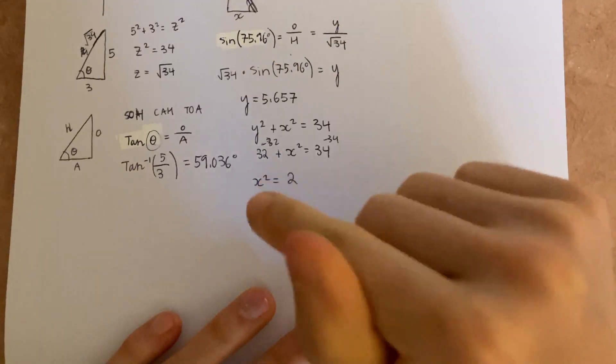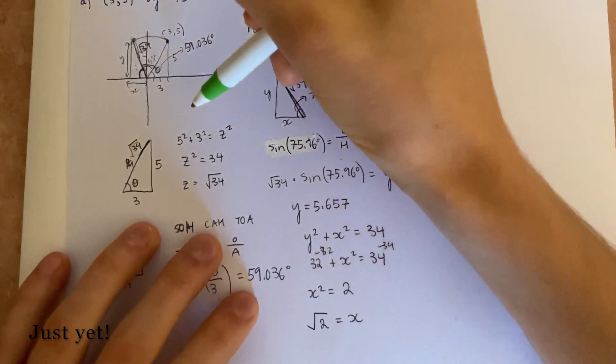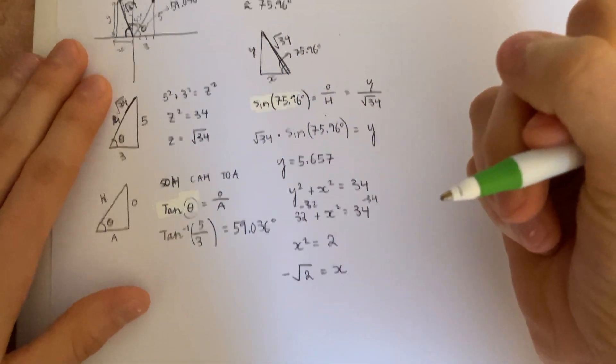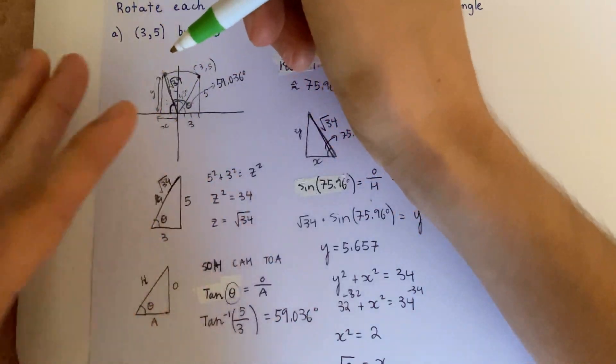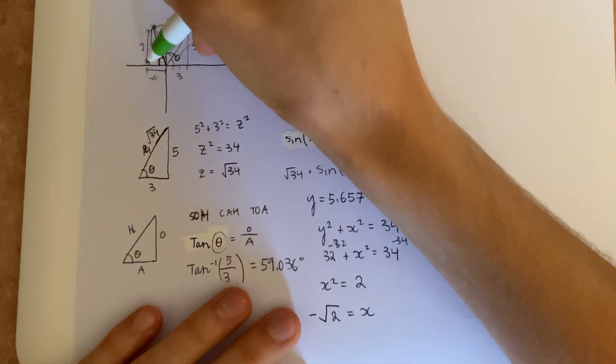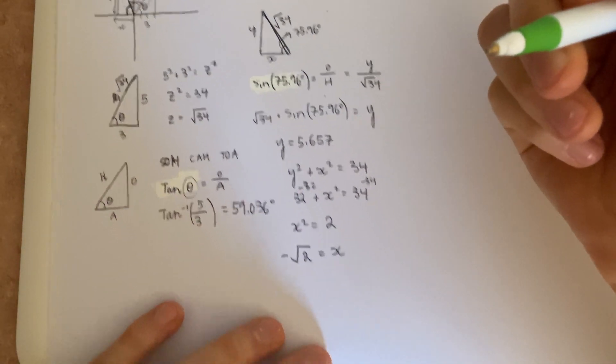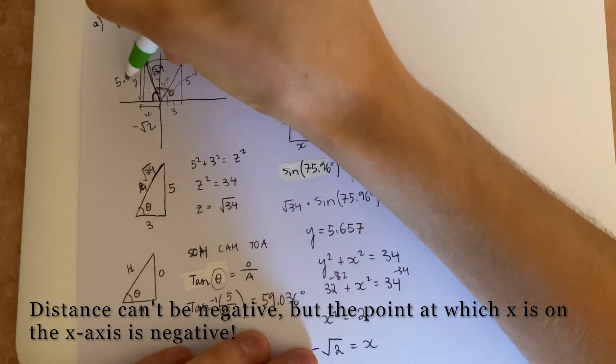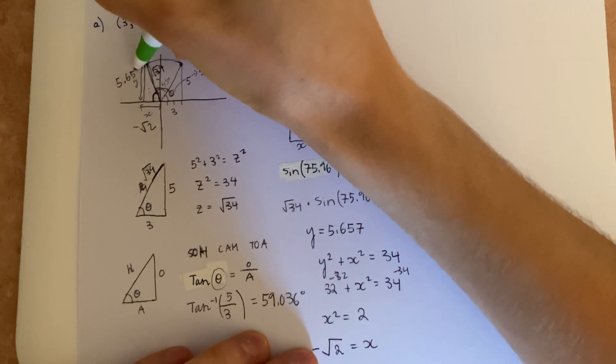But hold up! x is not the square root of 2 because it's flipped. So that means x is minus the square root of 2, because we're to the left of the coordinate plane. So that's a negative. But y stays positive. So that means this distance is minus the square root of 2, and this is 5.657.